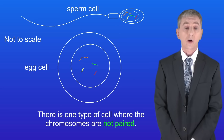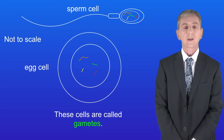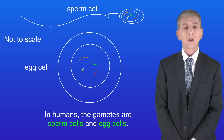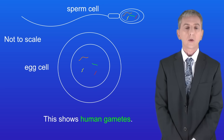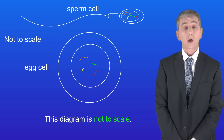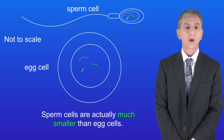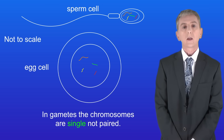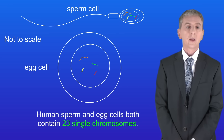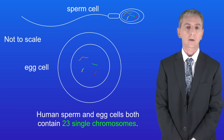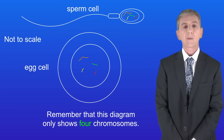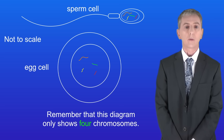Now there's one type of cell where the chromosomes are not paired. These cells are called gametes, and in humans the gametes are sperm cells and egg cells. I'm showing you human gametes here — this diagram is not to scale; sperm cells are actually much smaller than egg cells. You'll notice that in gametes the chromosomes are single, not paired. So human sperm and egg cells both contain 23 single chromosomes, but remember this diagram only shows four chromosomes.